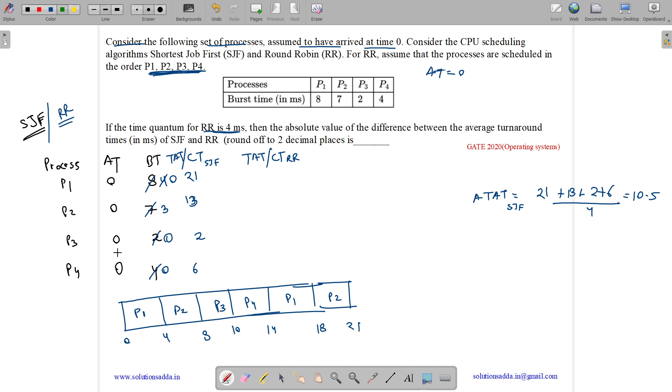Now what are the completion times? P1 gets completed over here. Then we start from the backward. So P2 gets completed at 21. P1 gets completed at 18. Then we have P4 gets completed at 14. Then we have P3 gets completed at 10.